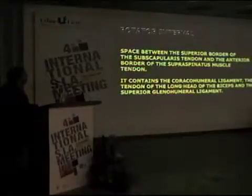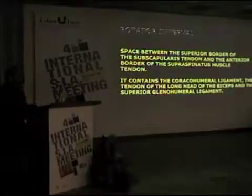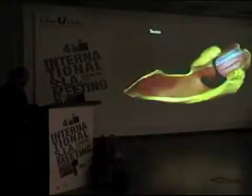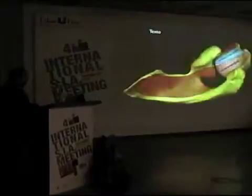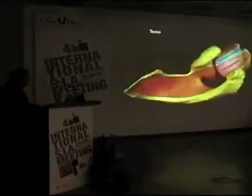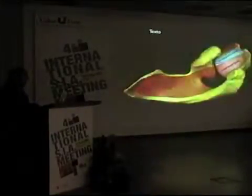The rotator interval is a space between the superior border of the subscapularis tendon and the anterior border of the supraspinatus muscle tendon. It contains the coracohumeral ligament, the tendon of the long head of the biceps, and the superior glenohumeral ligament. Here we can see a schematic picture of the rotator interval in blue, between the superior edge of the subscapularis and the anterior edge of the supraspinatus muscle.